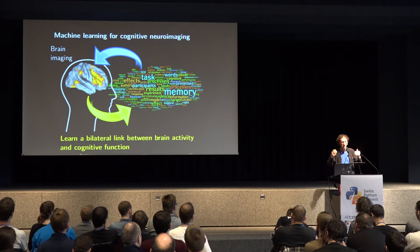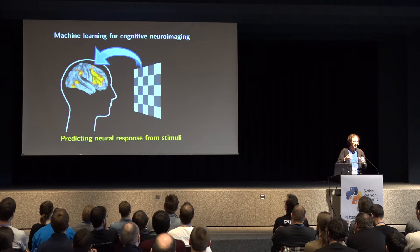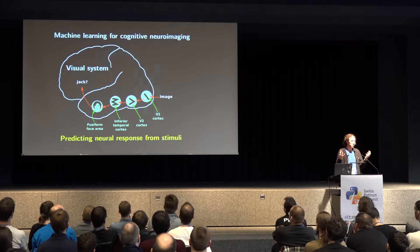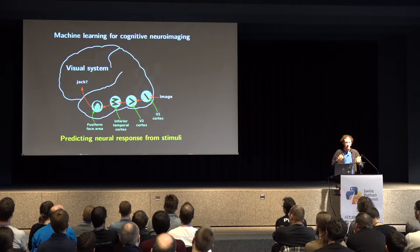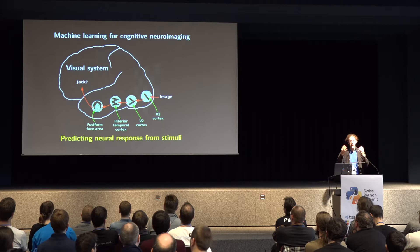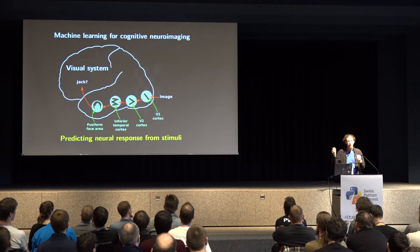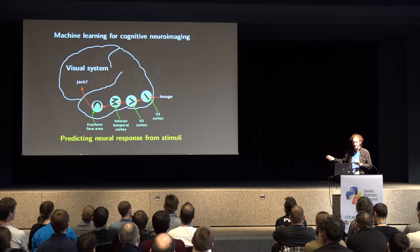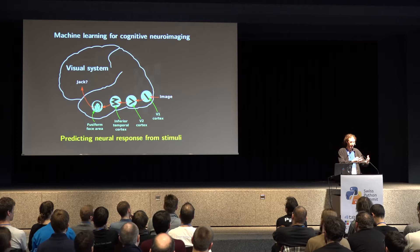One thing we can do is try to predict brain activity from the stimuli. Suppose you have a visual stimulus — we can try to predict the visual brain activity. This can be interesting to understand how the brain works to recognize or understand images, basically human vision. The general picture of how human vision works is that you have a set of different transformations, and the visual field that you see undergoes different transformations located in different areas of the cortex, each with different properties.